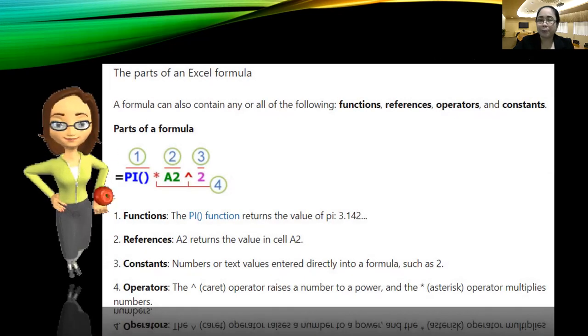There are four different parts of an Excel formula, and these are functions, references, constants, and operators.